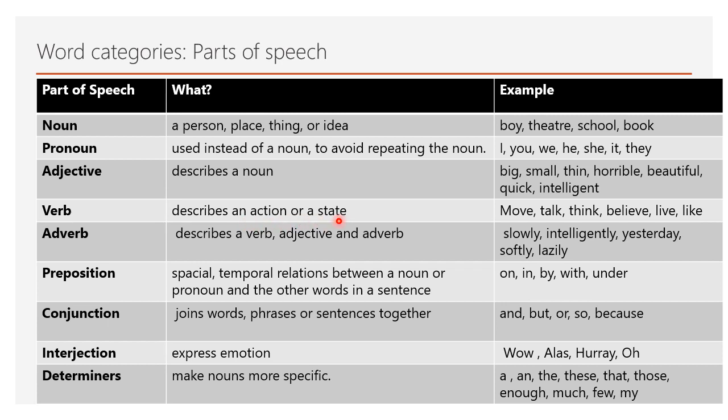Verb describes an action or a state. I am listening to this class. Listen is the verb here. Adverb describes a verb. He did this work intelligently. Intelligently emphasizes the work he has done. He is talking very softly. Softly is the adverb here. Preposition represents the spatial and temporal relationship between nouns and other words in the sentence. I sat on a bin. On represents the preposition. Conjunction combines words or sentences together. I like ice cream and strawberry. And is a conjunction here.